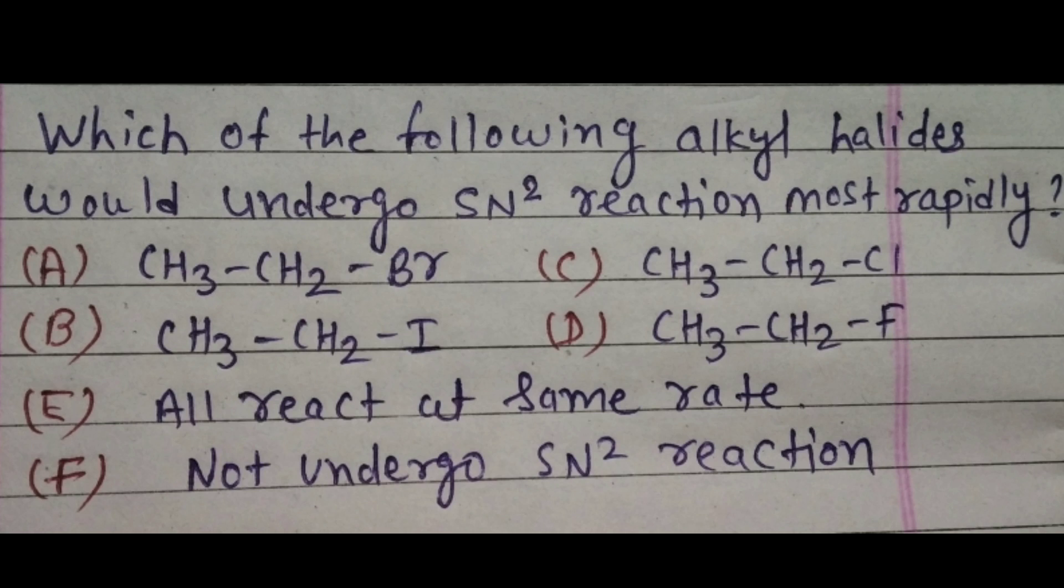So the better the leaving group, the more easily it will remove and the nucleophile will come and attack the substrate. So among all these four leaving groups, iodo is the best leaving group. That means iodoethane option B will undergo SN2 reaction most rapidly.